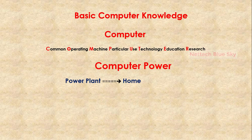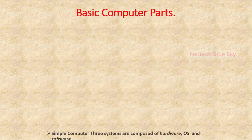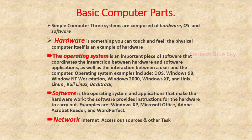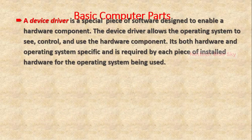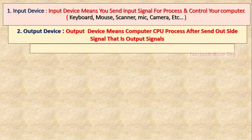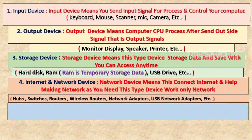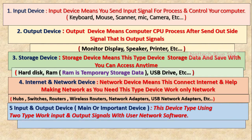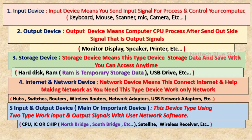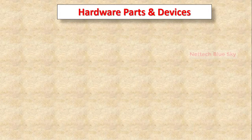In my last previous video, I told you the full name of computer technologies and some very important information for your computer, including basic parts of a system, computer types of devices. So input/output device, storage device, internet and internet device — all my videos are part-wise here.